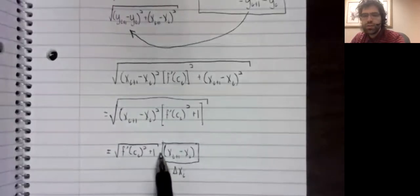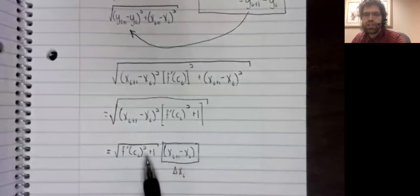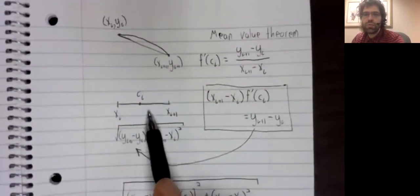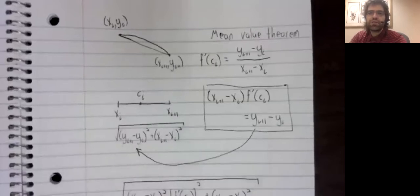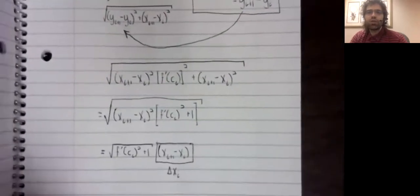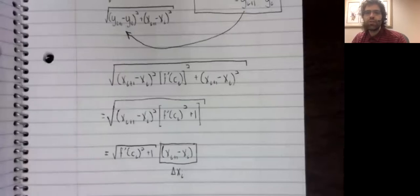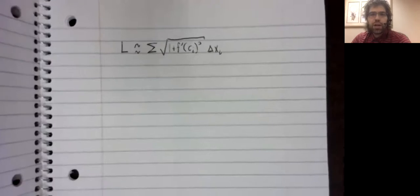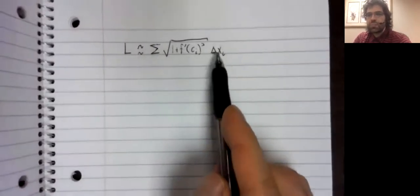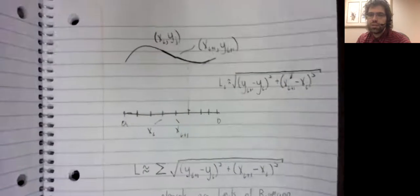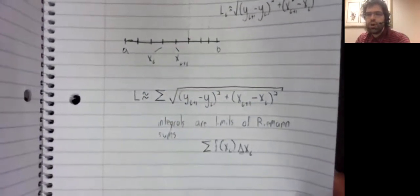So here's how we've managed to rewrite the length on one little sub-interval. If we repeat that process on every sub-interval and add our results together, we get the following approximation of the arc length. And what is this approximation of the arc length but a Riemann sum?